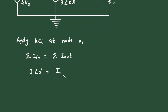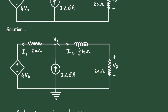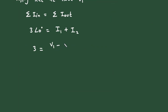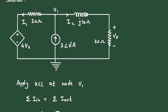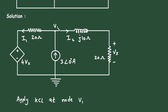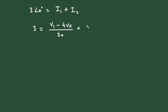So we write: 3∠0° = I1 + I2. We can simply write 3 = I1 + I2. In voltage form, I1 = (V1 − 4Vx) / 20, plus I2 = (V1 − 0) / (20 + j10).